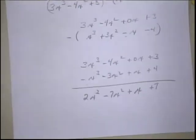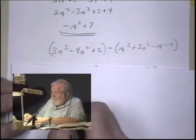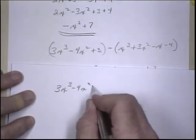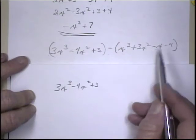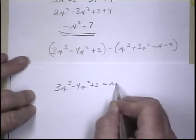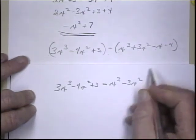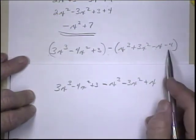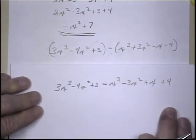Now we'll do the same problem and subtract it horizontally. Horizontally, we keep everything in a row. The first polynomial had a plus on it, so we can just remove the parentheses. But this second one has a negative in front of it, so we multiply through by negative 1, which changes all of these signs. This becomes negative x³, and it changes all the signs — not just the first one — so this becomes negative 3x². This negative becomes a positive. It changes negatives to positives and positives to negatives when you have a negative out in front. And this becomes a positive.